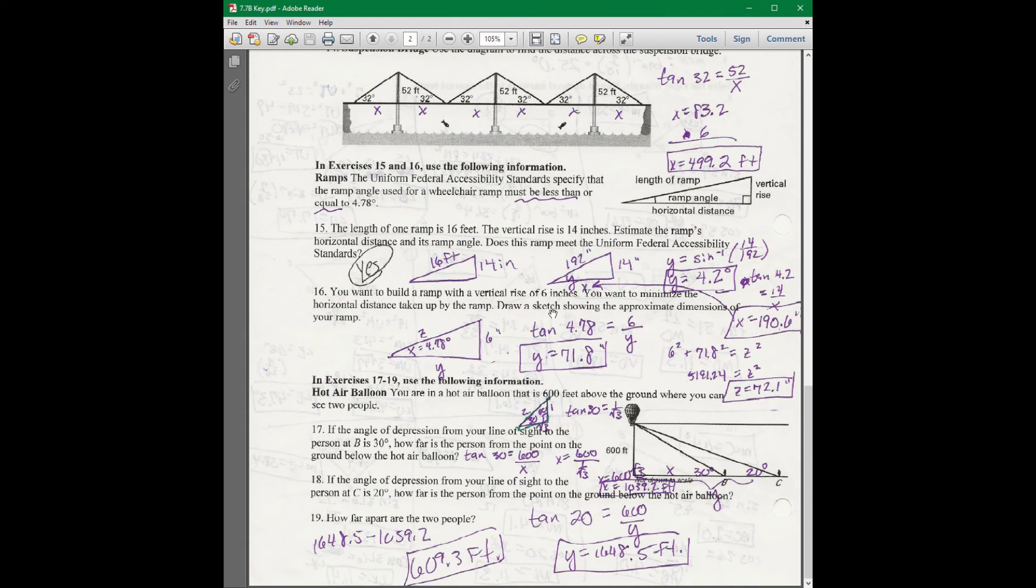15 and 16 is talking about this ramp over here. So you have vertical rise, horizontal distance, the length of the ramp. It says that it must be less than or equal to 4.78 degrees. So they make a ramp with a 14-inch vertical rise and the ramp is 16 feet long. I changed them to the same units.